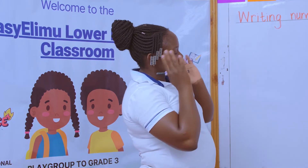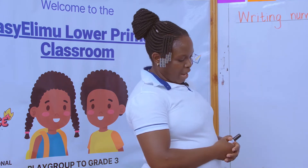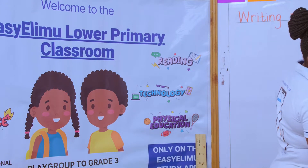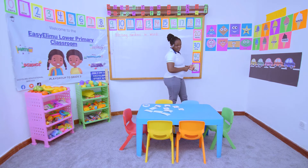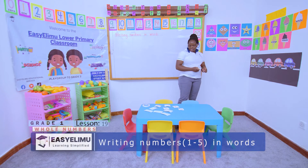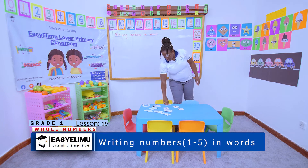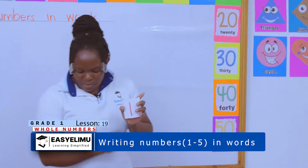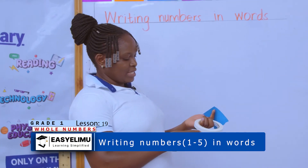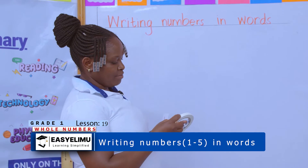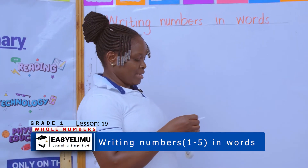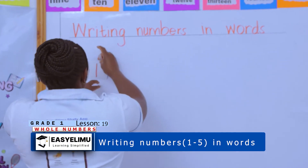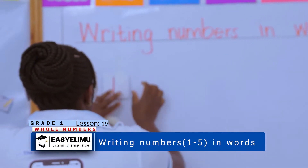But today we now want to know how do you write the number name for each number. So when you look at my table here, I have several number cards and several number names. Who can tell me which number is this? This is number one.